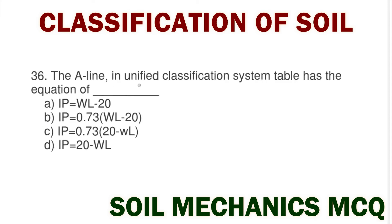Next question: the A-line in the unified classification system has the equation — option A IP = WL − 20, option B IP = 0.73(WL − 20), option C IP = 0.73(20 − WL), option D IP = 20 − WL, where IP is plasticity index and WL is liquid limit. The correct answer is option B: IP = 0.73(WL − 20).